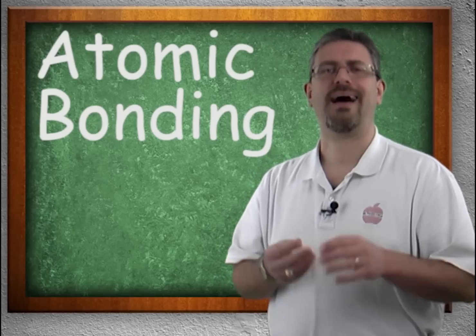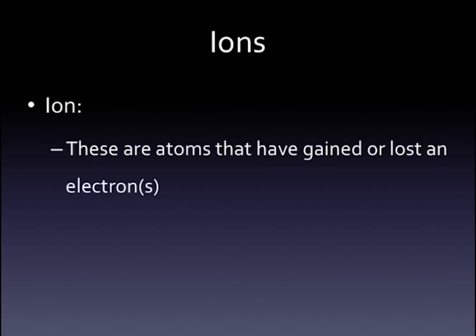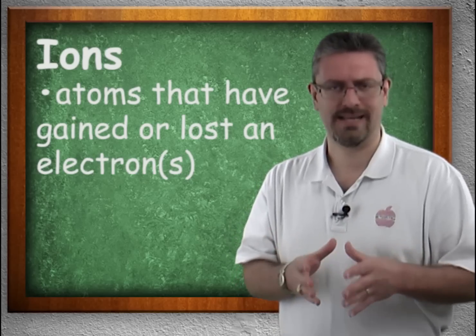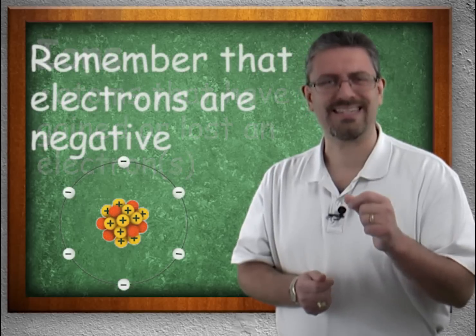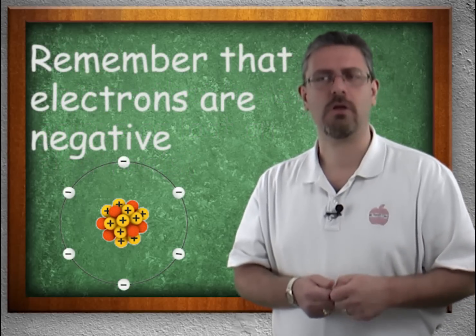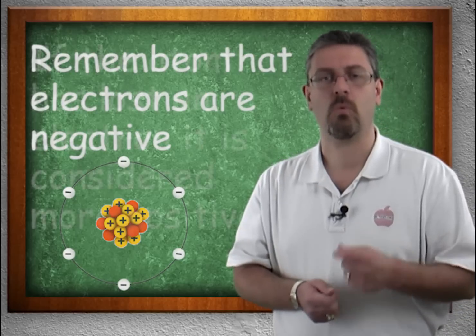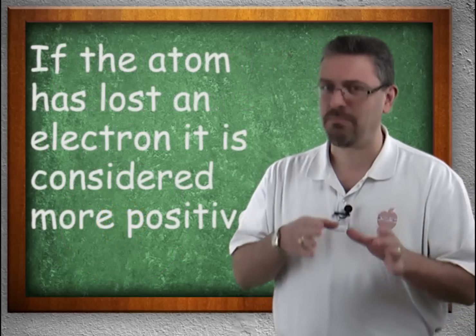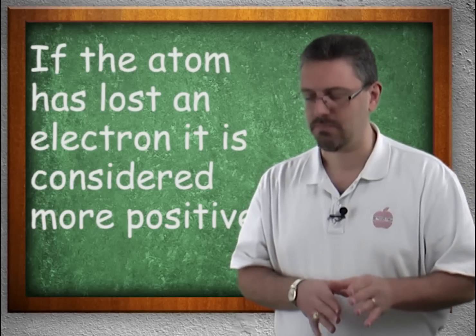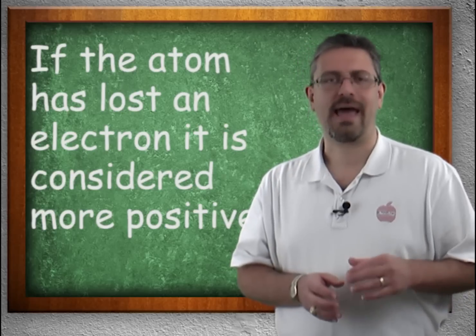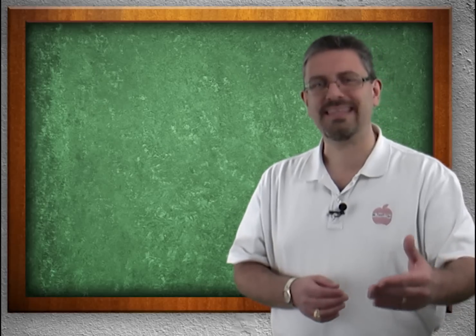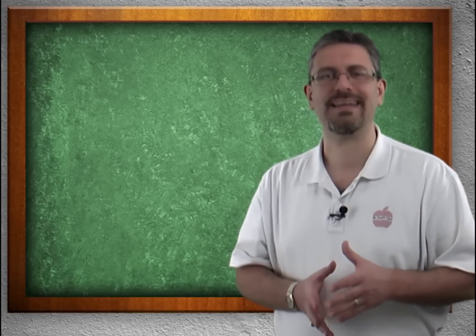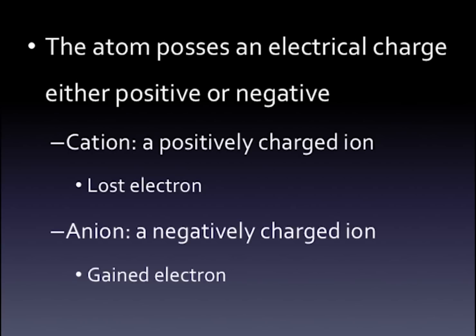We begin by talking about ionic bonds. Ionic bonds involve atoms that have either gained or lost an electron. When you lose or gain an electron, you change the overall charge of the atom. Remember that electrons are negative. So if an atom loses an electron, it becomes more positive — not truly positive, just less negative. When an atom gives away an electron it becomes more positive; when it gains an electron, it becomes more negative. These are called ions.